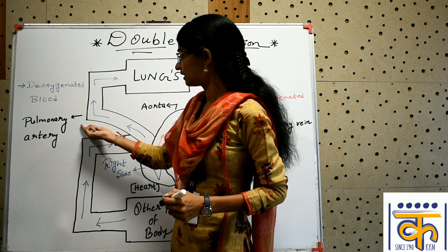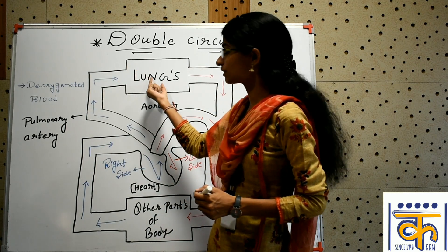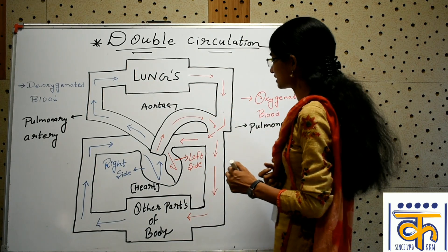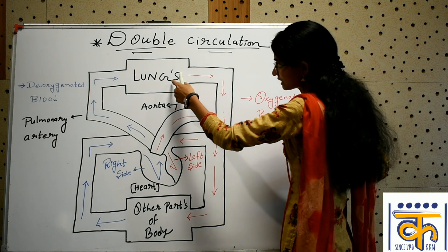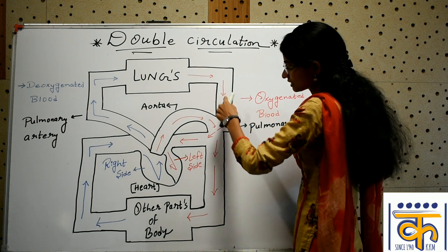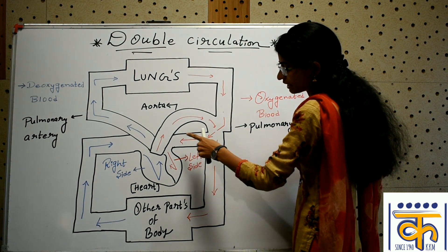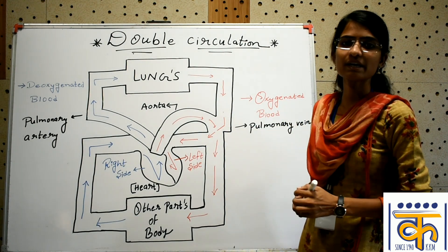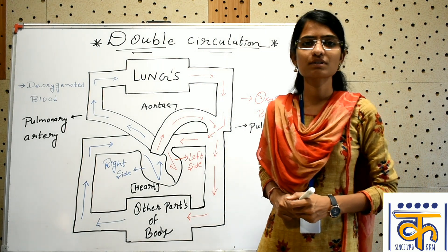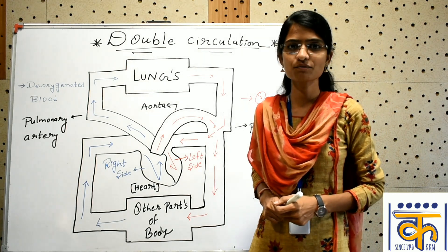Pulmonary artery takes the blood towards the lungs, whereas pulmonary veins bring oxygenated blood towards the heart. So they are the exceptions in terms of other arteries and veins.